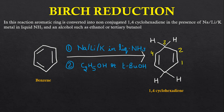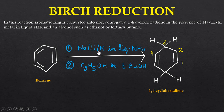In this reaction, the aromatic ring — here we have taken benzene — is converted into non-conjugated 1,4-cyclohexadiene. This reaction takes place in the presence of sodium, lithium, or potassium metal in liquid ammonia and ethyl alcohol or tertiary butanol. The sodium or any metal acts as an electron-transfer reducing agent, and the alcohol acts as a proton donor. The product is a six-membered cyclic ring with two double bonds at the 1 and 4 positions, called 1,4-cyclohexadiene.